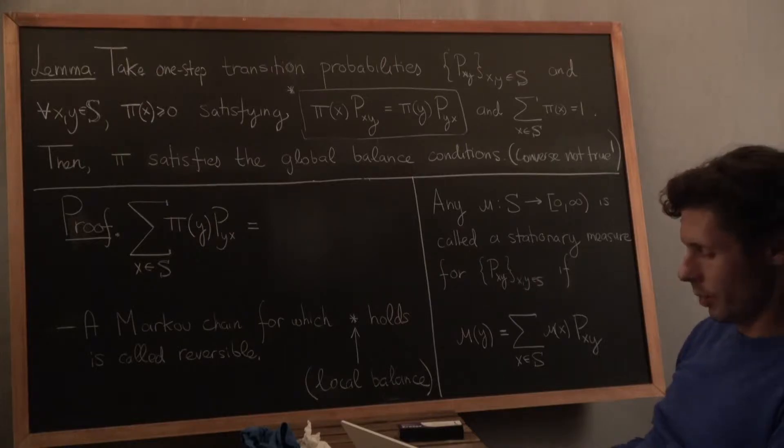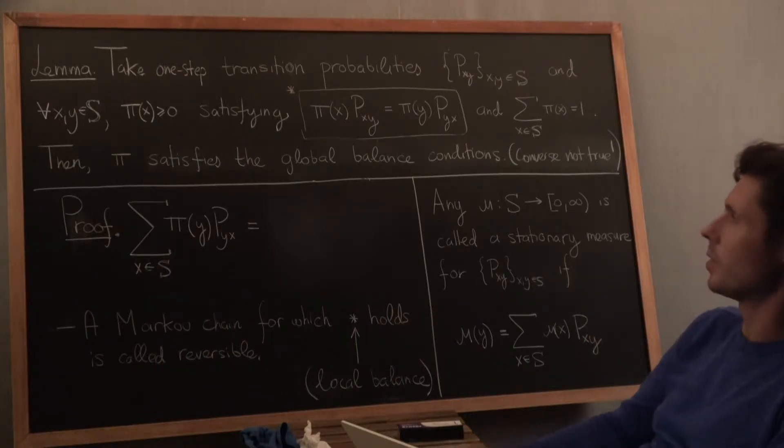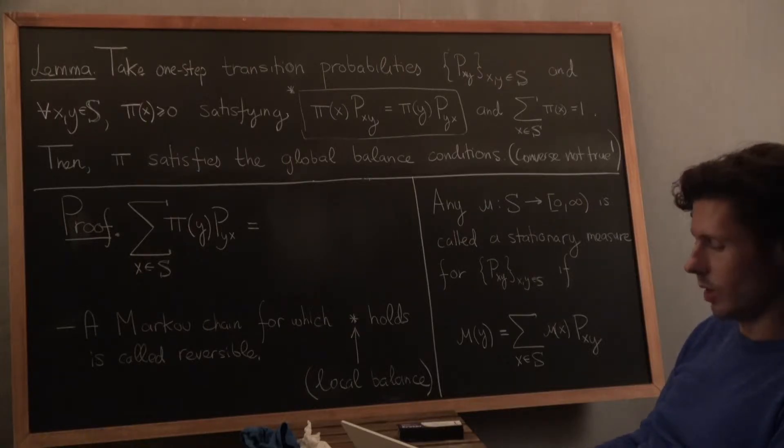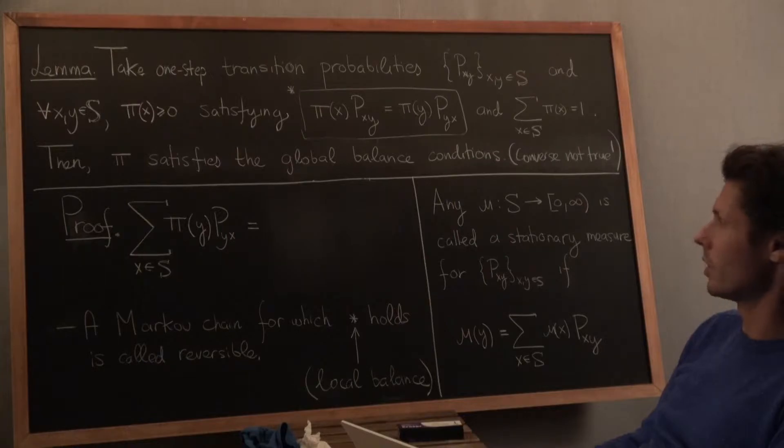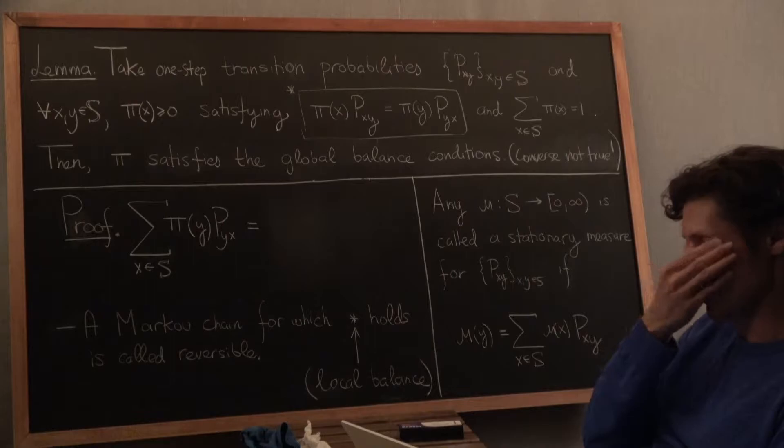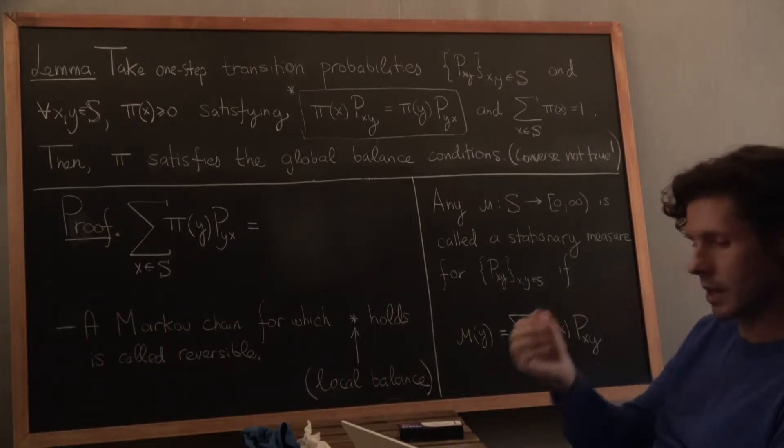And we saw at that point, or at least we stated at that point, that satisfying star was enough to establish that pi is a stationary distribution. But we never quite said what its relation to the other condition was, namely global balance. We had two conditions, and global balance is the one that we've been using in the last few clips to prove various lemmas.